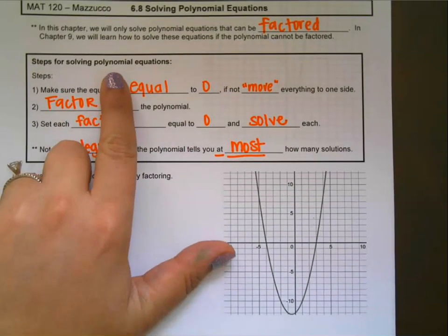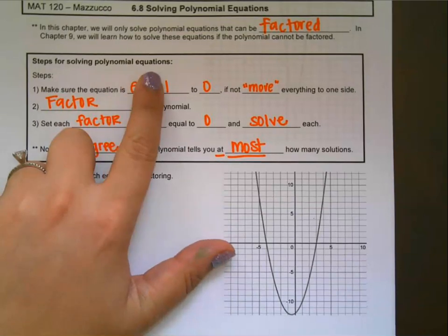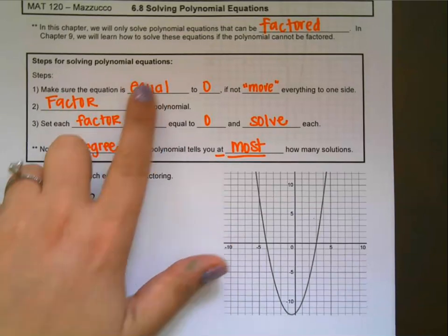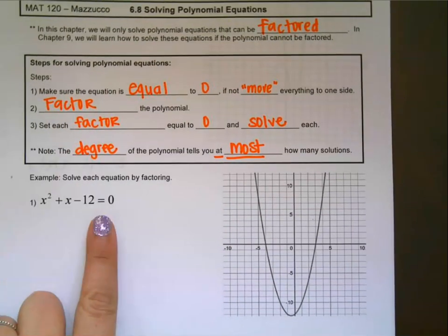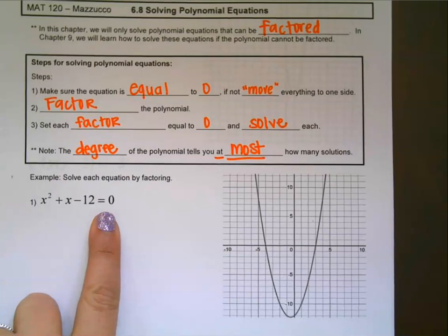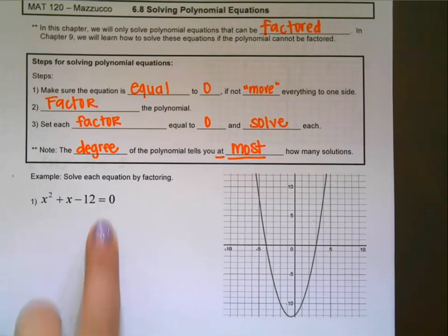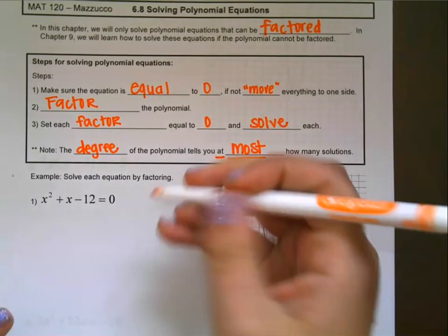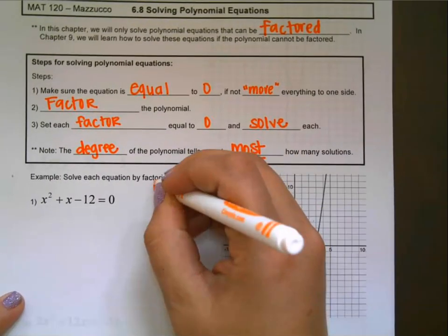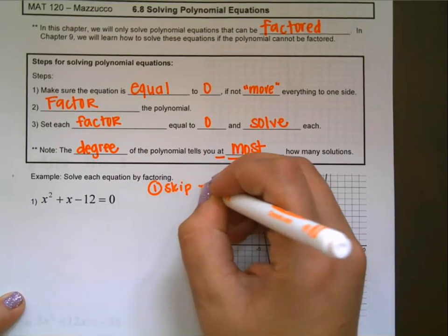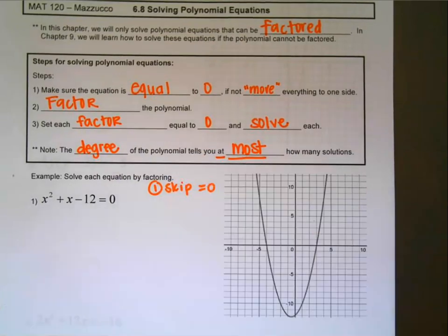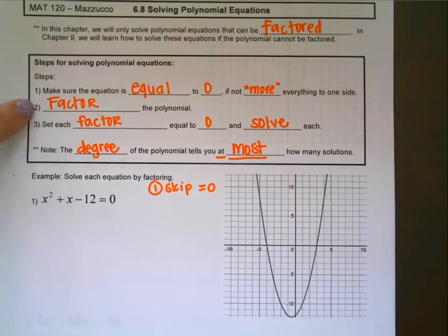The steps for solving a polynomial equation: first, make sure the equation is equal to zero. If you look at example number one, you can see that we can skip step one because it already equals zero. The second step is we are going to factor the polynomial.